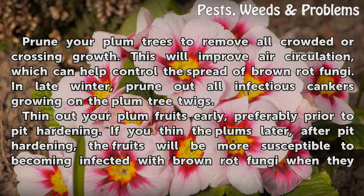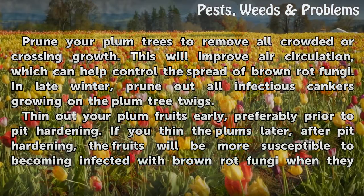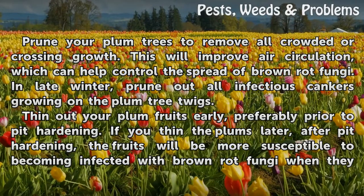Prune your plum trees to remove all crowded or crossing growth. This will improve air circulation, which can help control the spread of brown rot fungi.